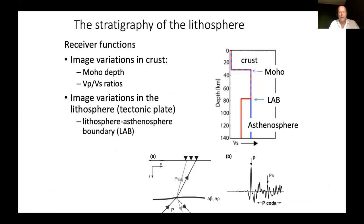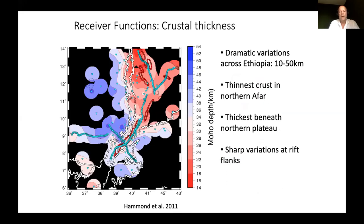If we want to look at more of the stratigraphy, we can use receiver functions. What we do here is look at how seismic energy converts at boundaries from a P wave to an S wave or vice versa, allowing us to map depths, the Moho, the thickness of the crust, and its average VP/VS ratio. We can also use S-to-P conversions to look at conversions from the lithosphere-asthenosphere boundary. A paper by James Hammond shows the dramatic variation in crustal thickness across the Ethiopian plateau — greater than 40 kilometers on the plateau, dropping to less than 30 kilometers in the Main Ethiopian Rift, and getting as thin as 15 kilometers in the northern reaches of Afar. This very sharp transition is not consistent with stretching models but is consistent with magmatic system models.